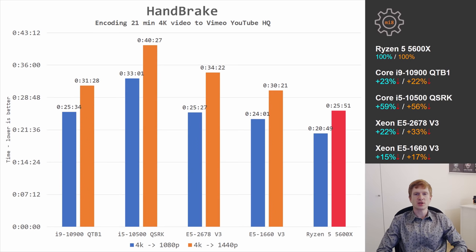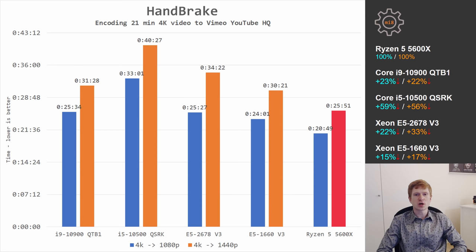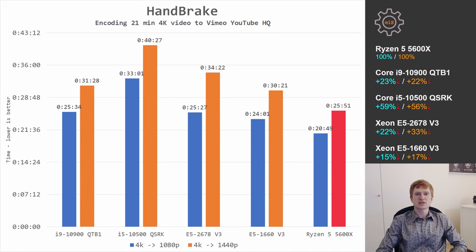In Handbrake, encoding 4K video to 1080p and 1440p for YouTube, the results are surprising: the Ryzen 5 5600X beats the Core i9-10900 QTB1 by 23% and 22%. Handbrake is clearly well-optimized for Ryzen — it's hard to explain how a 6-core Ryzen with the same clock beats a 10-core Core i9 by this margin. The Core i5-10500 loses 59% and 56%. The Xeon E5-2678v3 loses 22% and 33%, getting close to the Core i9. The E5-1660v3 overclocked loses 15% and 17%.